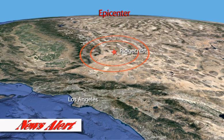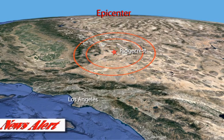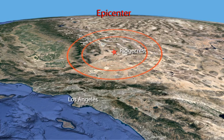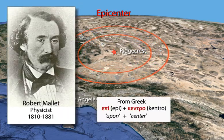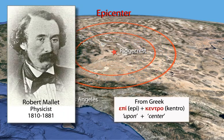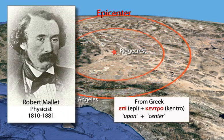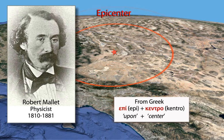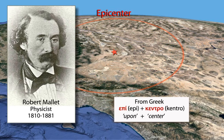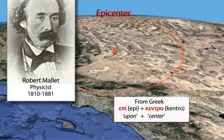News reports commonly refer to an earthquake's epicenter. The word is a concept coined by Robert Mallet to help people visualize an earthquake's location. The epicenter is the map location on Earth's surface above where the earthquake began.